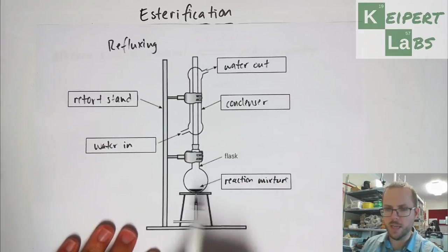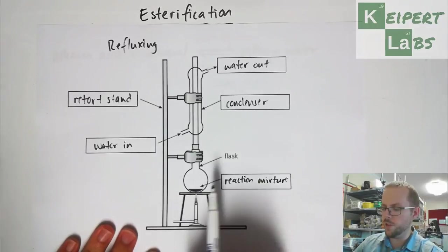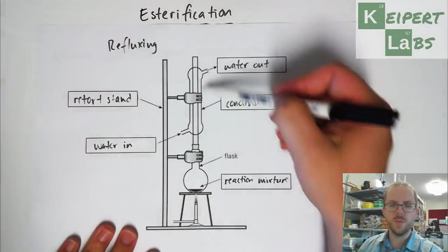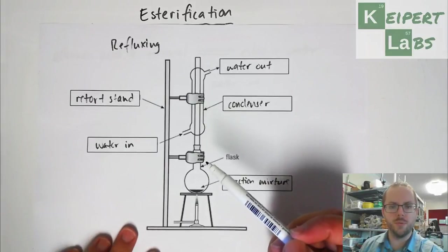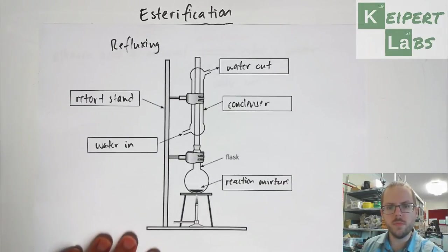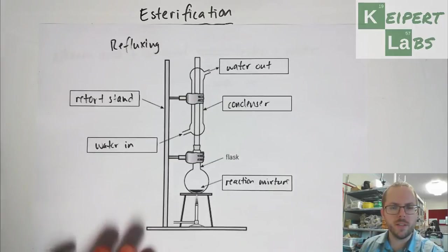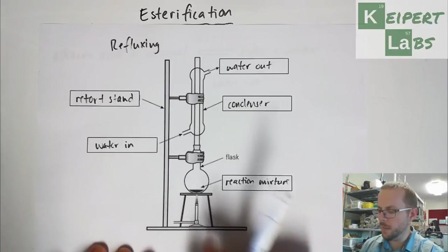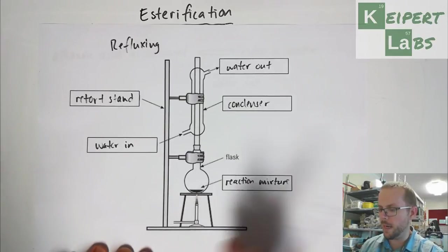And so then what we have inside here is our reaction mixture. So what happens is that the esterification reaction occurs inside this flask, and the use of this condenser helps to allow that reaction to continue. So then it begs the question of why do we use this particular setup? What's the purpose of this arrangement? And so ultimately it comes back to this equilibrium.